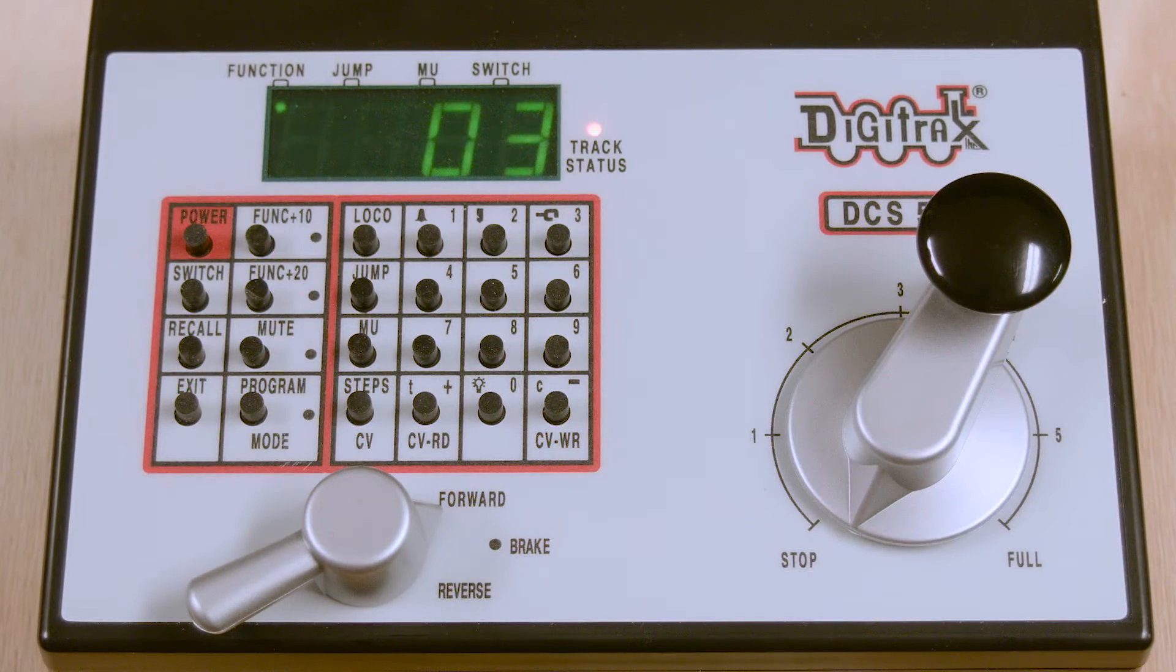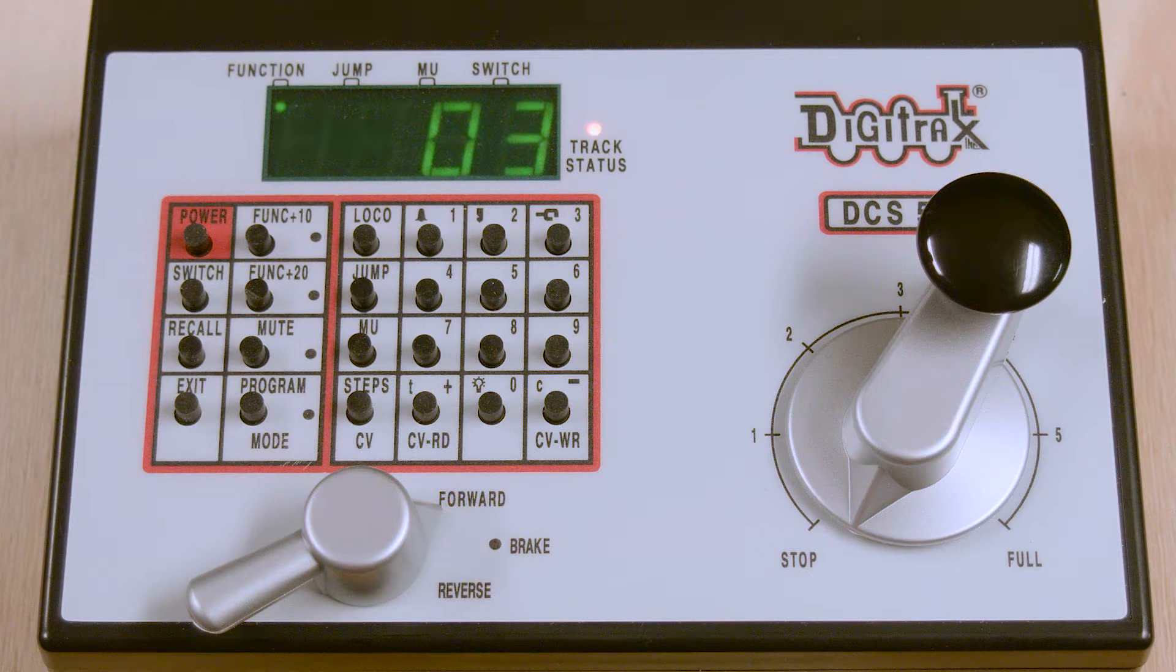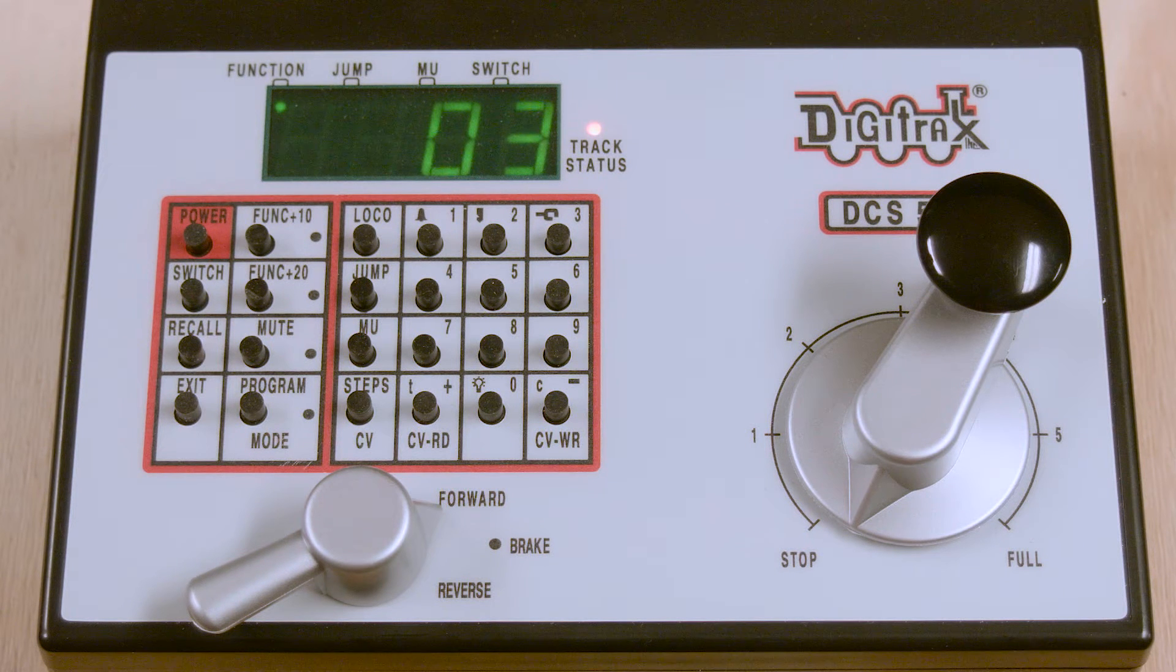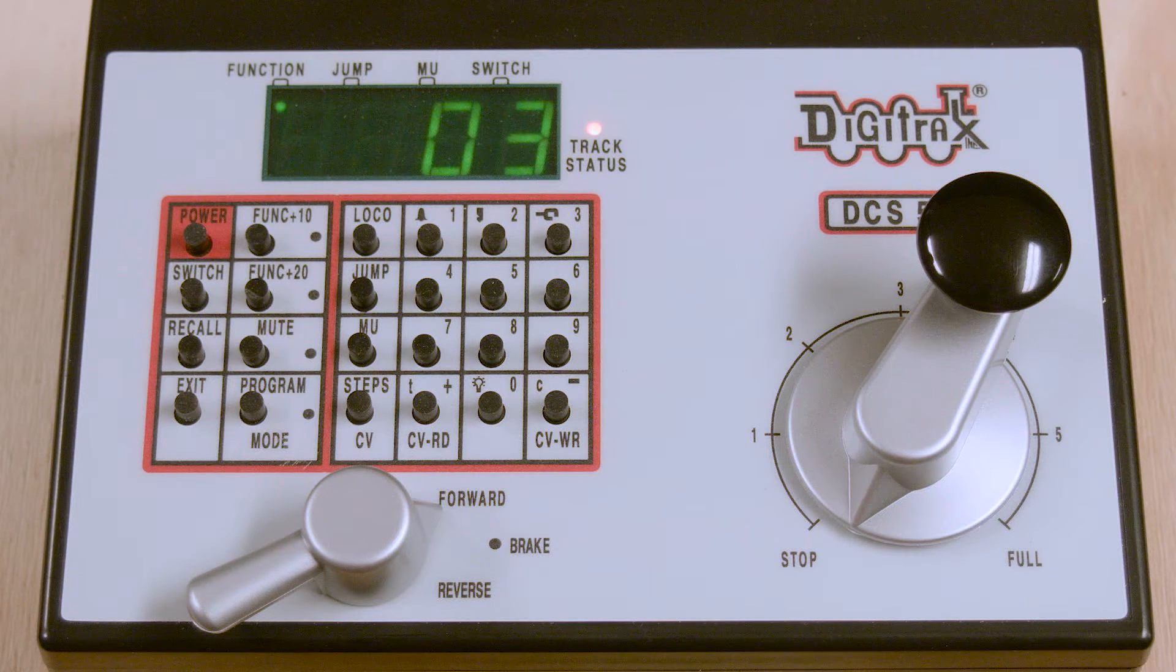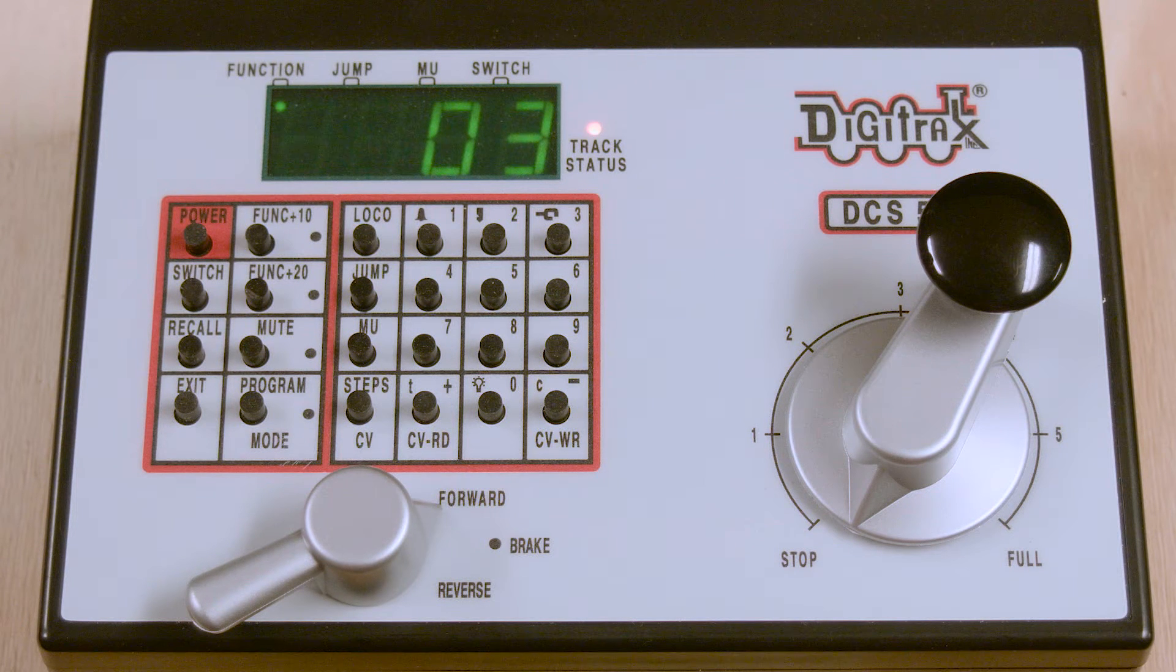In this video we're going to show you how to program a new address. In this case, a four-digit address of the locomotive, that's going to be number 135, since 135 is considered a four-digit address as far as DCC is concerned. We're also going to change a CV to make the headlight become a Mars light, and we're going to do that by reprogramming CV49 to a value of 34.